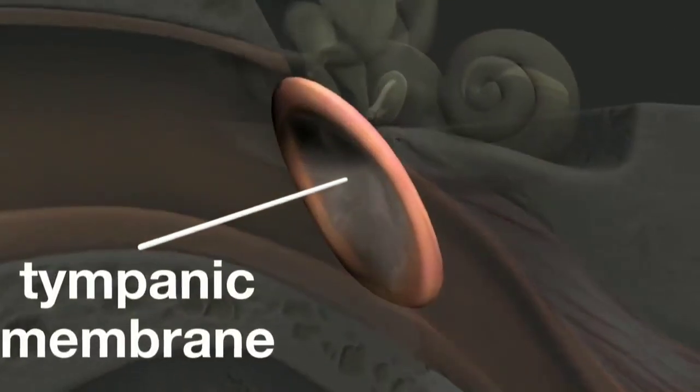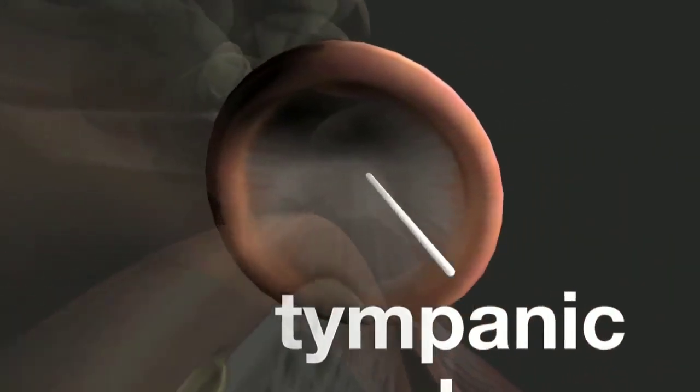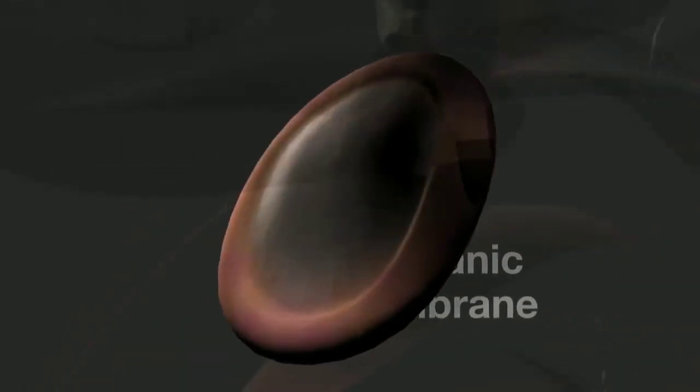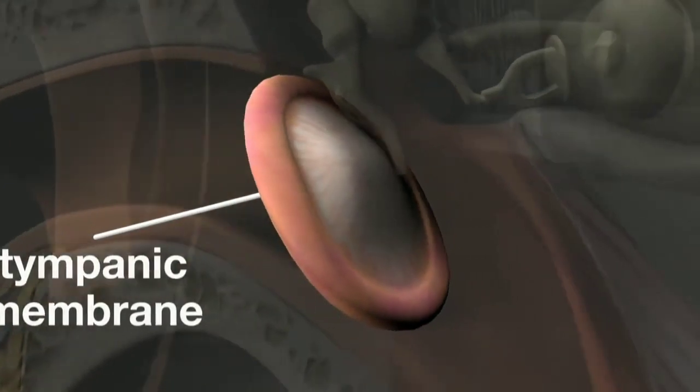The tympanic membrane is concave with an area of between 60 and 90 millimeters and an average thickness of just seven hundredths of a millimeter, and it has a very rich blood supply.